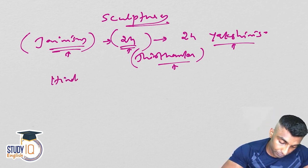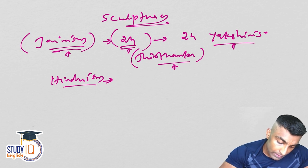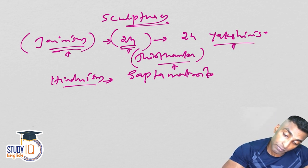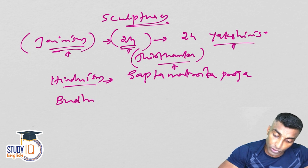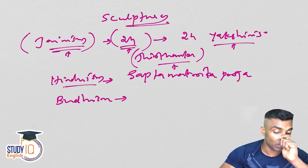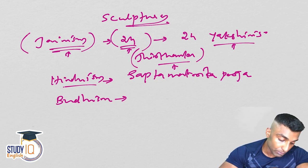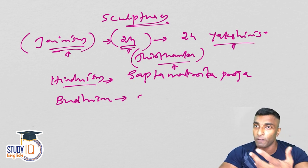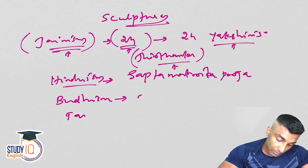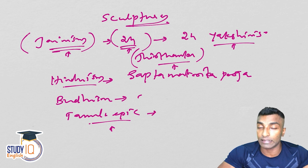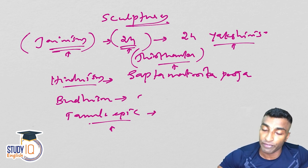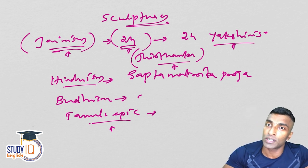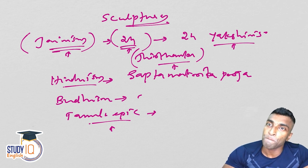In Buddhism, Yakshini is actually synonymous with auspicious occasions and is respected very well. In the Tamil epic Silapadigaram, which is part of Sangam literature, there are evidences about the worship of folk goddesses. So Yakshis, Yakshinis and Yaksh are worshipped across India and across religions — mainly Hinduism, Jainism and Buddhism at that point of time.